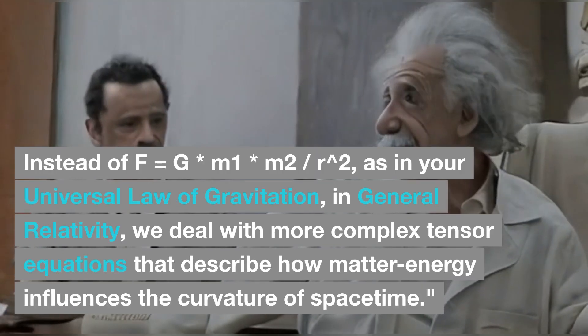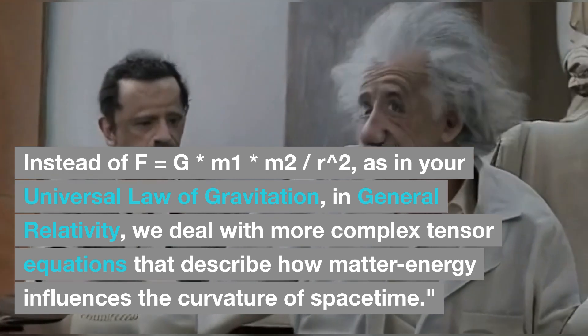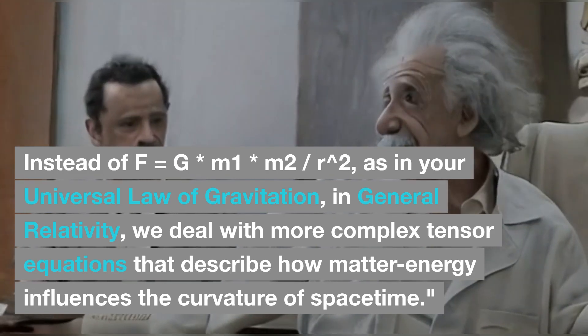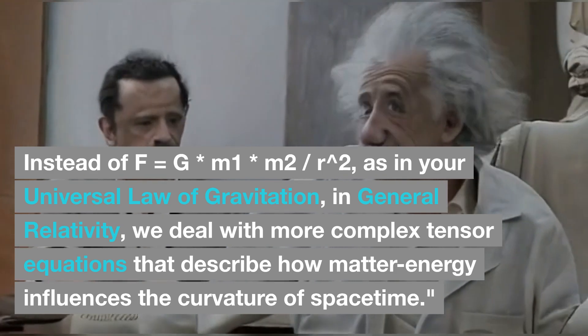Instead of F = Gm₁m₂/r², as in your universal law of gravitation, in general relativity we deal with more complex tensor equations that describe how matter-energy influences the curvature of spacetime.